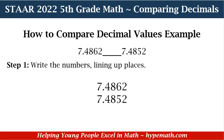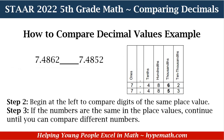So let's look at our example. We are comparing 7.4862 and 7.4852. Step 1: we are going to write the numbers lining up the decimal places, and it is so important that you have the decimal places lined up correctly. Because if not, when you're comparing the place values, you may do it incorrectly. Now we're going to begin to compare the digits starting at the far left.